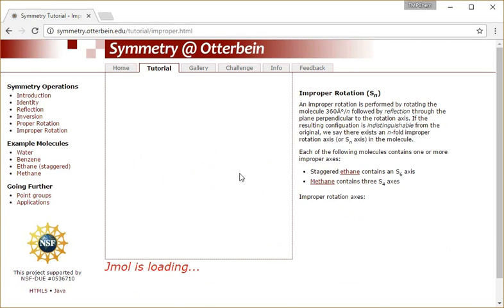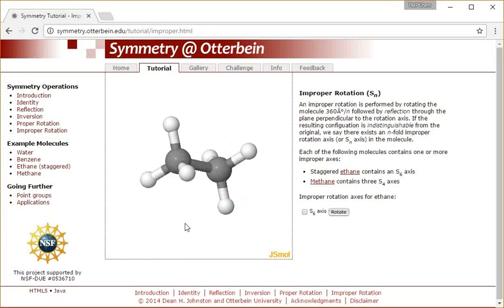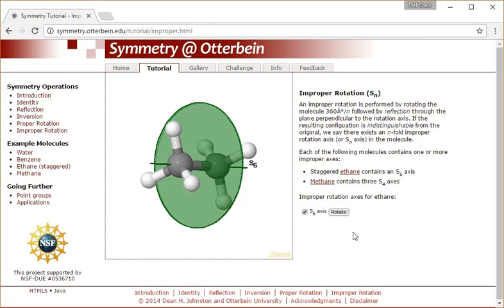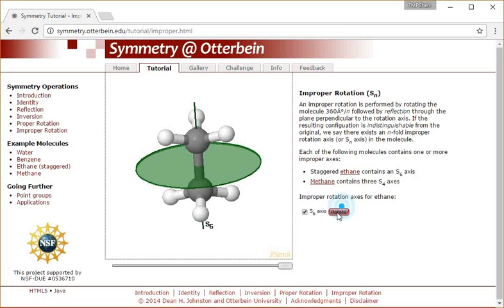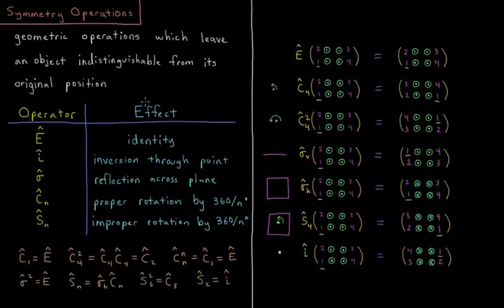And then lastly, improper rotation, for which they have an example of ethane, which has an s6 axis. So we rotate by s6, which is 360 over 6, or 60 degrees, and then reflect through a perpendicular plane. So 60 degree rotation and then reflection. That's the basic introduction to our five major symmetry operations, which we'll use in our subsequent videos extensively on all different kinds of molecules.